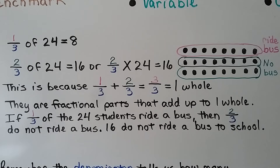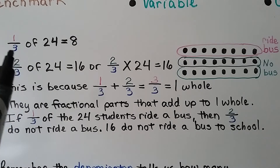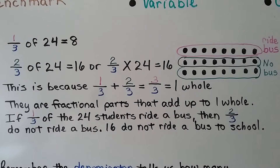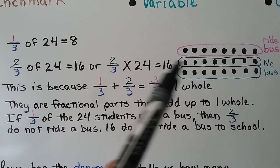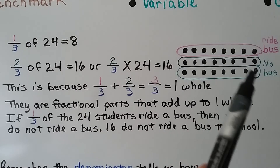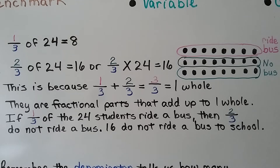One-third of 24 is equal to 8. Two-thirds of 24 is equal to 16, or two-thirds times 24 is equal to 16. We had three groups and circled one group — there are eight in that group, which is how many of Miss Cho's students ride a bus. The remaining two groups would be two-thirds of the 24, which is 16. One-third plus two-thirds equals three-thirds, equal to one whole — they are fractional parts that add up to one whole. If one-third of 24 students ride a bus, then two-thirds do not, so 16 do not ride a bus to school.